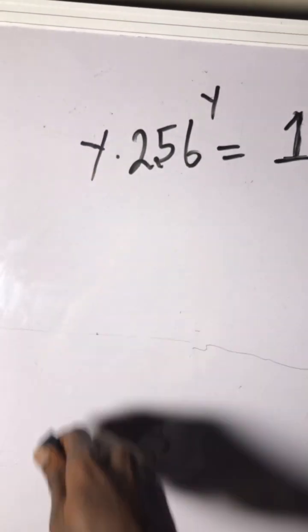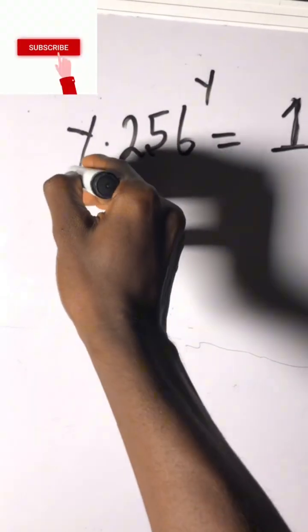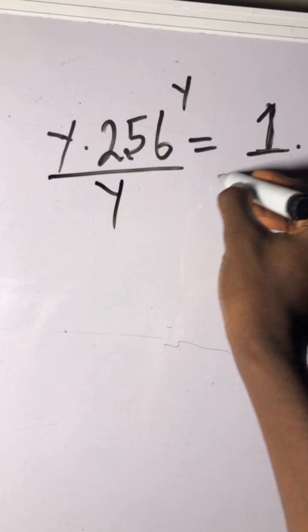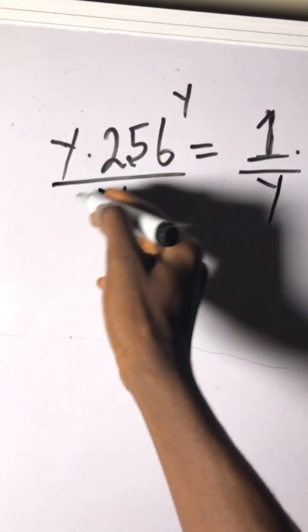Now this is the first thing we got to do is take away this y and we need to divide on both sides by y. Okay, now this cancels.